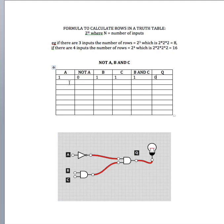Now let's look at A on, B on, but C off. The NOT gate output is the same — it's 0. If B or C are off, then the output from the AND gate is 0. So the output from A is 0, the output from B and C is 0, so the output of Q is 0.